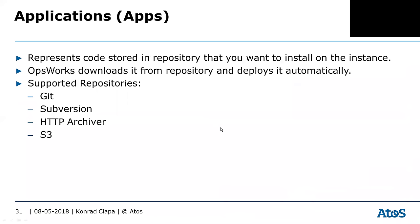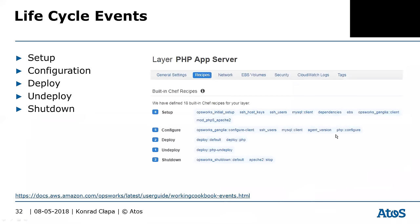Applications represent the code stored on your servers. You can download your application from different repositories. Supported sources include Git, Subversion, HTTP archive, and S3.